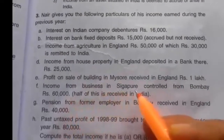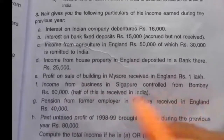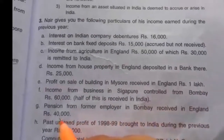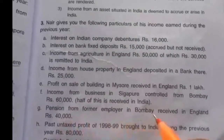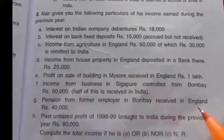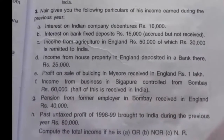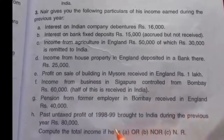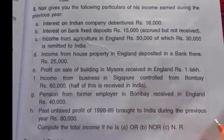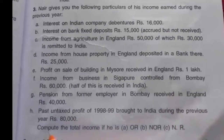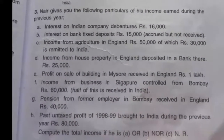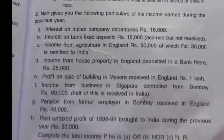Fifth, profit on sale of building in Mysore received in England Rs. 1 lakh. Sixth, income from business in Singapore controlled from Bombay Rs. 60,000, half of which is received in India. Seventh, pension from former employer in Bombay received in England Rs. 40,000. Eighth, past untaxed profit of 1998–99 brought to India during the previous year Rs. 80,000.